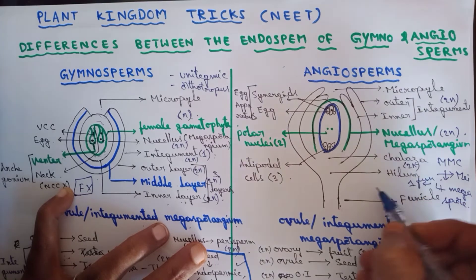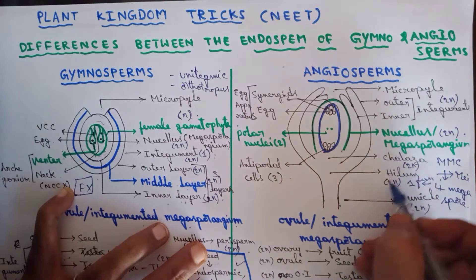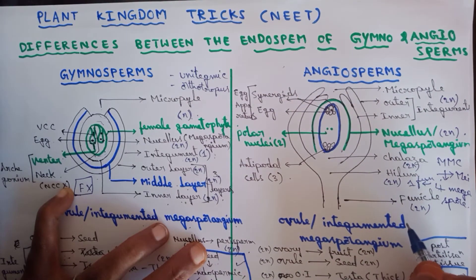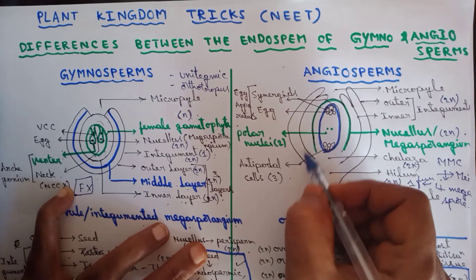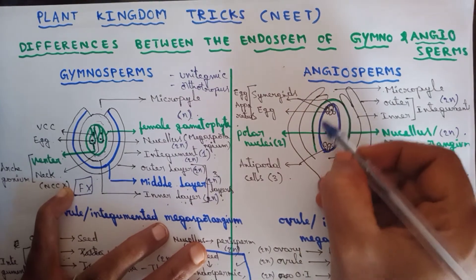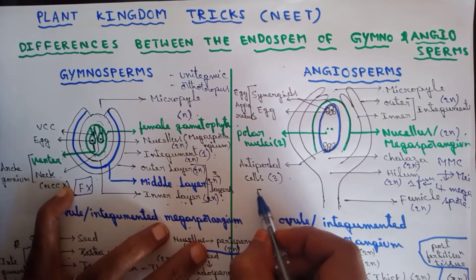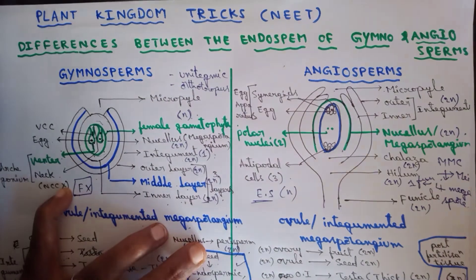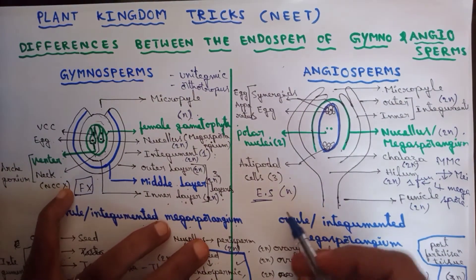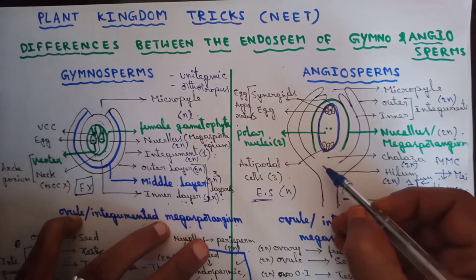The ploidy of chalaza, hilum, and funicle is all diploid (2n), whereas the ploidy of the embryo sac is haploid — as it is developed from the haploid megaspore. All cells inside this embryo sac are haploid.